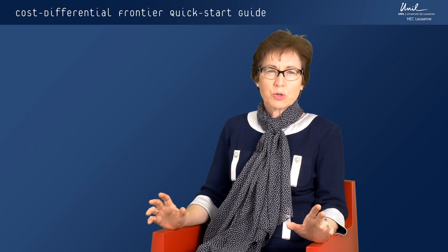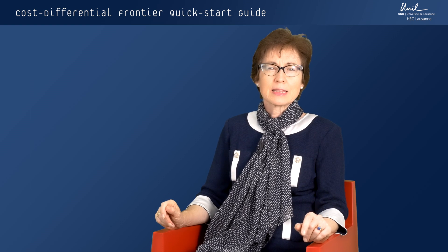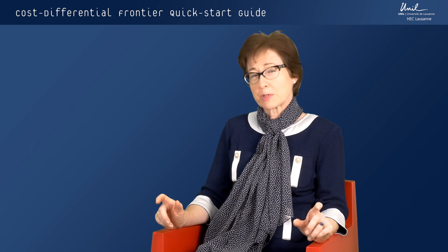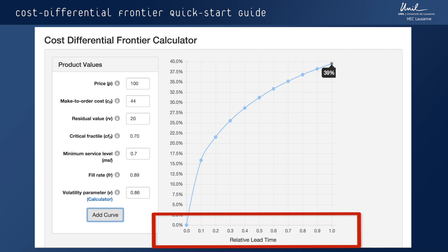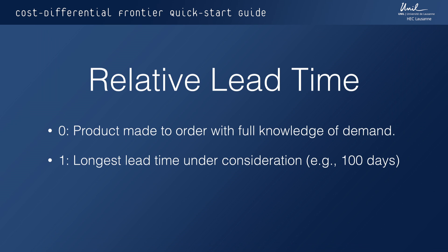Before I show you how to use the tool, I'd like to first show you some of the results that we get with the tool. Here's a fairly standard result. On the horizontal axis, we've got the relative lead time, which goes from zero to one. A relative lead time of zero says that when we make the decision about what to produce, we know what demand is and we produce to order. A relative lead time of one corresponds to the longest lead time that we're considering.